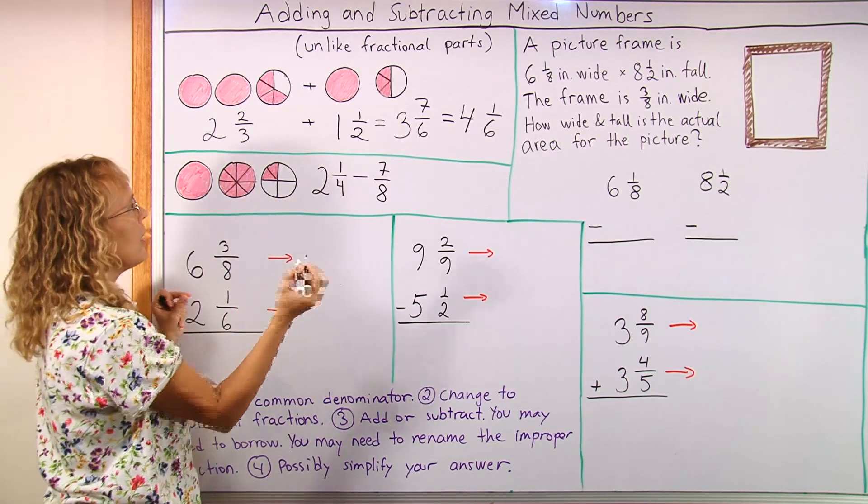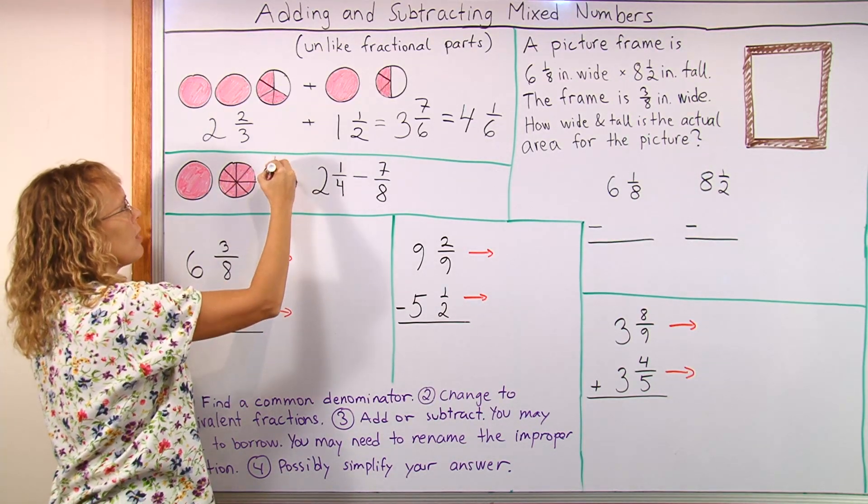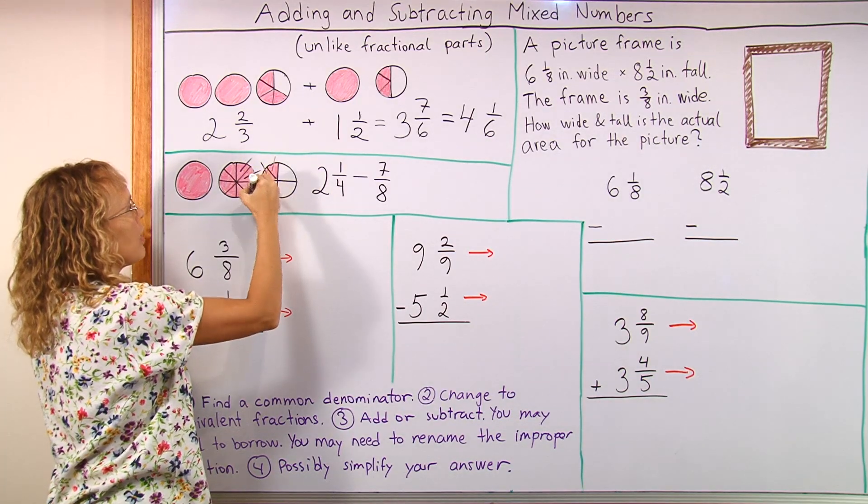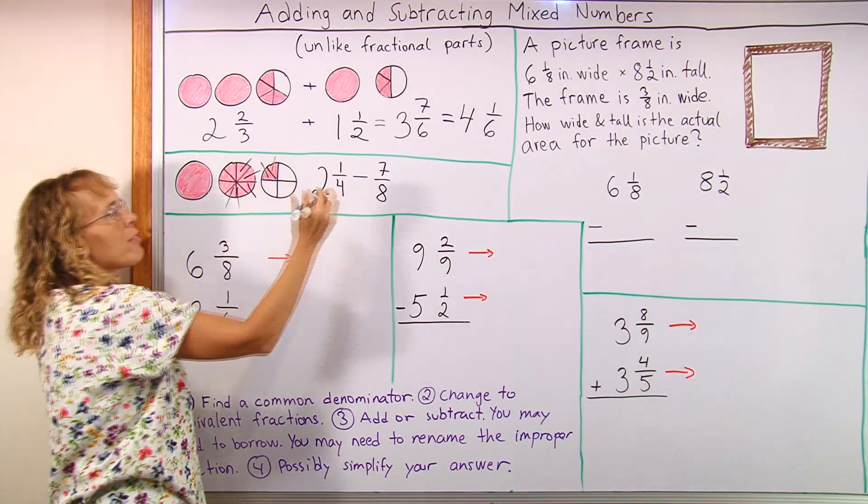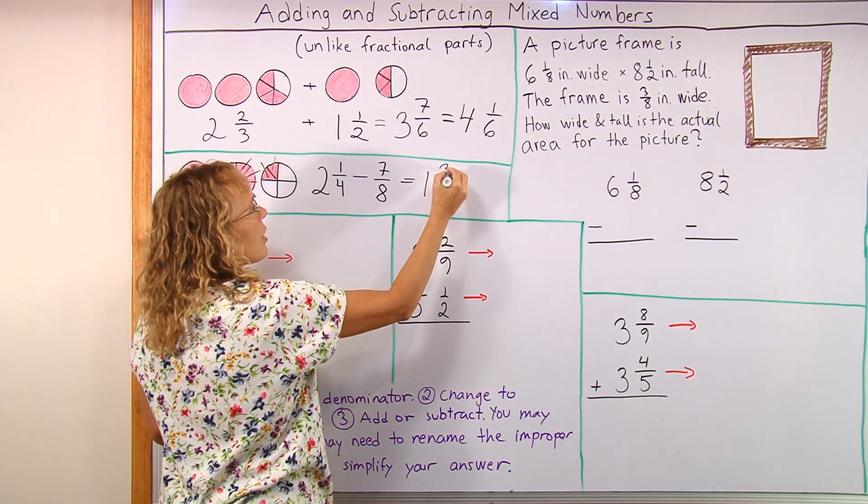Okay, now it's ready. I can cross out 7 eighths. Like 1, 2, 3, 4, 5, 6, 7. I'm left with one whole pie and 3 eighths.